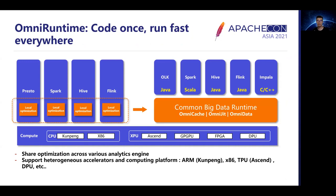Let's see how the current analytics engines adapt to this trend. Most engines optimize themselves, but this local optimization cannot be reused by other engines. So each engine needs to be optimized independently. For example, Spark provides whole-stage codegen to improve performance, but this optimization cannot be used by Presto or other engines. Can we have a common framework to support different engines? Therefore, the goal of Omni Runtime is: code once and run fast everywhere.